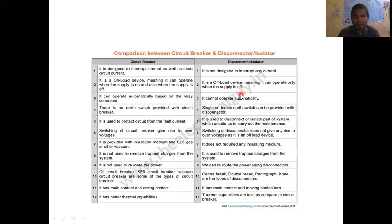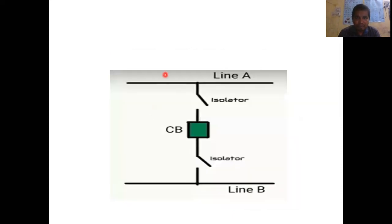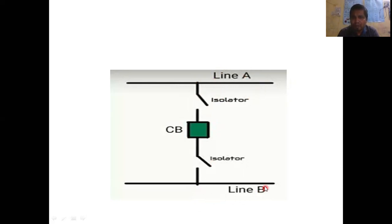The isolator is not automatic — it is manual and used for maintenance purposes. The circuit breaker protects the circuit from fault current; when a fault occurs, the relay sends information to the circuit breaker, which disconnects the fault section. The isolator is used to disconnect or isolate a part of the system to carry out maintenance. Switching off the circuit breaker can give rise to overvoltages, but switching the isolator does not give rise to overvoltage as it is an off-load device. For example, when you want to do maintenance work on a line, you disconnect it using the isolator, and the circuit breaker is separately present for fault protection.